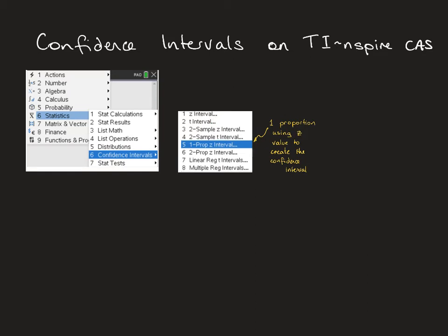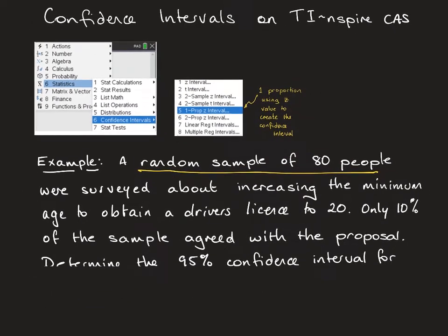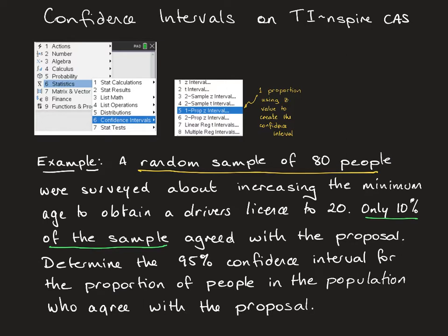So let's have a look at a question. A random sample of 80 people were surveyed about increasing the minimum age to obtain a driver's license to 20. Only 10% of the sample agreed with the proposal. What we want to do is determine the 95% confidence interval for the proportion of people in the population who agree with the proposal.